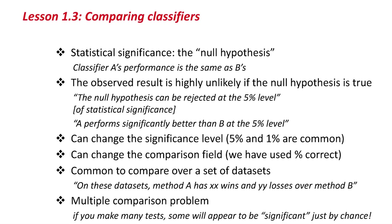What we've looked at is comparing classifiers. In statistical terms, people talk about the null hypothesis — that is, that one classifier's performance is the same as another. The numbers we observe are highly unlikely if the null hypothesis is true; that is, we reject the null hypothesis at the 5% level of statistical significance. The Experimenter tells you when the null hypothesis is being rejected, or equivalently, we could say that A performs significantly better than B at the 5% level. In the Experimenter, we can change the significance level — it's common to use 5%, or 1% for critical applications like medical applications, or perhaps 10% for less critical applications.